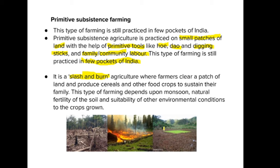This type of farming depends upon natural things like monsoon, natural fertility of the soil, and environmental conditions. Old primitive tools like hoe and digging sticks are used. It is practiced in small patches of land using family and community labor, and is still practiced in a few pockets of India.